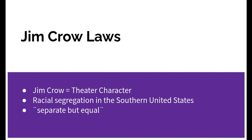Then we've got the Jim Crow laws. Jim Crow is not a person — it's actually a theater character, a persona used to make fun of African-American people. We'll watch a video about this next week. These laws, created after the Great Depression, had to do with racial segregation in the Southern United States. The whole term was 'separate but equal,' which caused Black people to drink at different drinking fountains, go to different classrooms, and not be in the same areas as white people. The Jim Crow laws are something we're going to look deeper into.